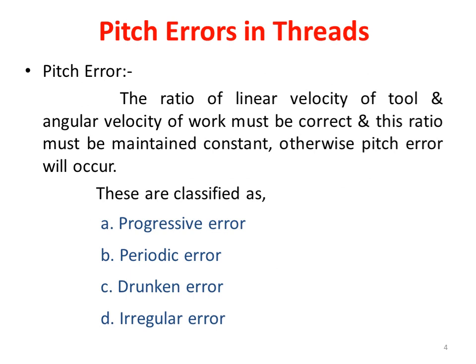Let us now learn pitch errors in screw threads — this is an important part to be learnt in detail. The ratio of linear velocity of the tool and angular velocity of the work must be correct and maintained constant; otherwise pitch error will occur. Pitch errors are classified into four types: progressive pitch error, periodic pitch error, drunken error, and irregular error.